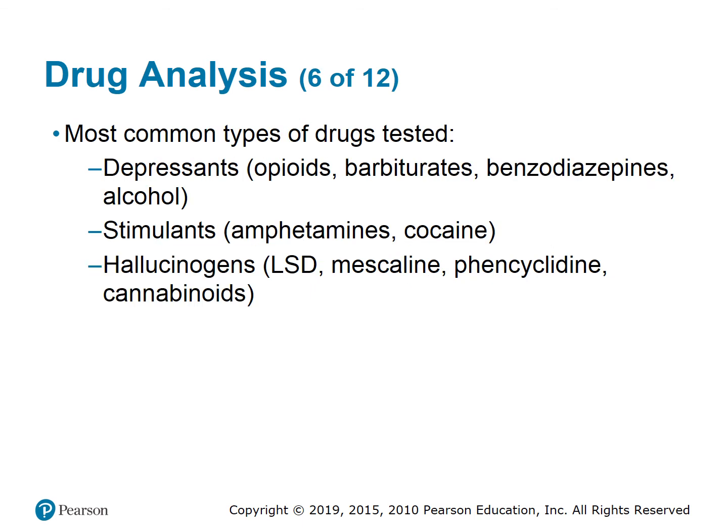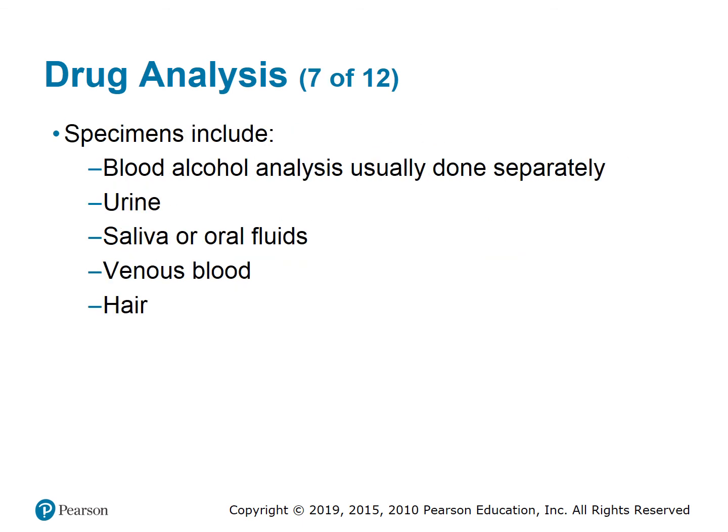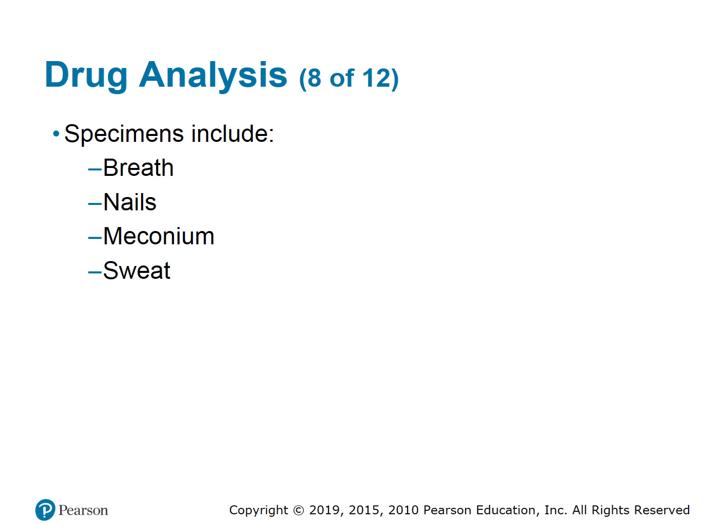The most common types of drugs tested are depressants, opioids, barbiturates, benzodiazepines, alcohol, stimulants, amphetamines, cocaine, hallucinogens, mescaline, phencyclidine, and cannabinoids. Specimens include blood (alcohol analysis usually done separately), urine, saliva, oral fluids, venous blood, hair, breath, nails, meconium, and sweat.